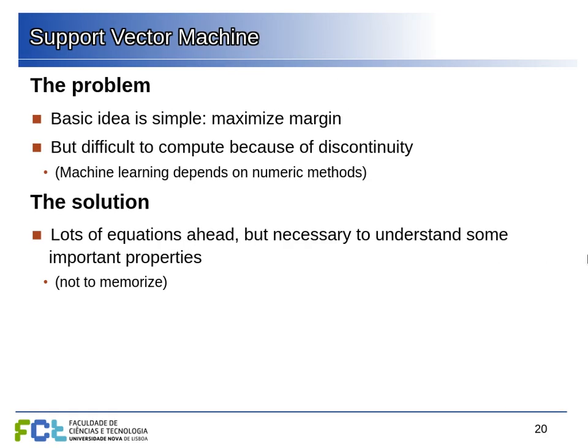So the basic idea is simple: we want to maximize the margin. But numerically we cannot solve that problem if we just formulate it naively, and machine learning also requires that the computer be able to find the solutions. We must take a detour to find a way to solve the maximum margin classifier problem, and this is what gets us to the support vector machine. I'm not going to give a complete derivation, but I'll give you the minimum necessary to understand what the support vector machine is.